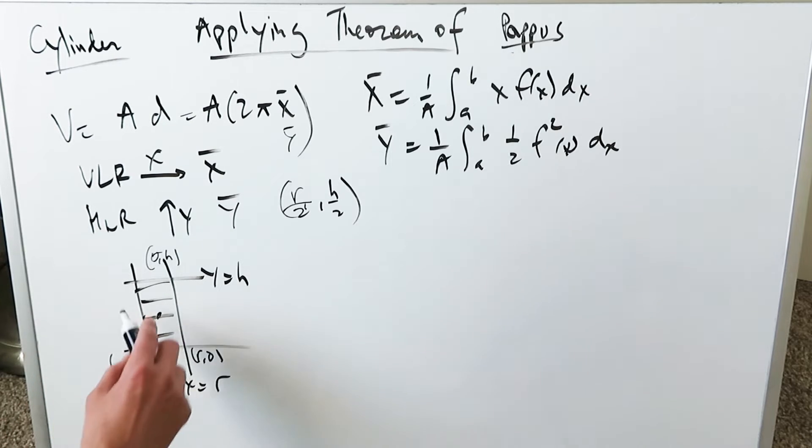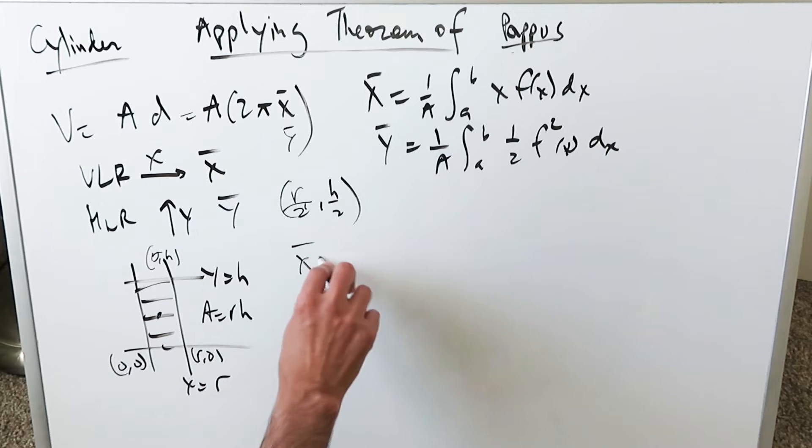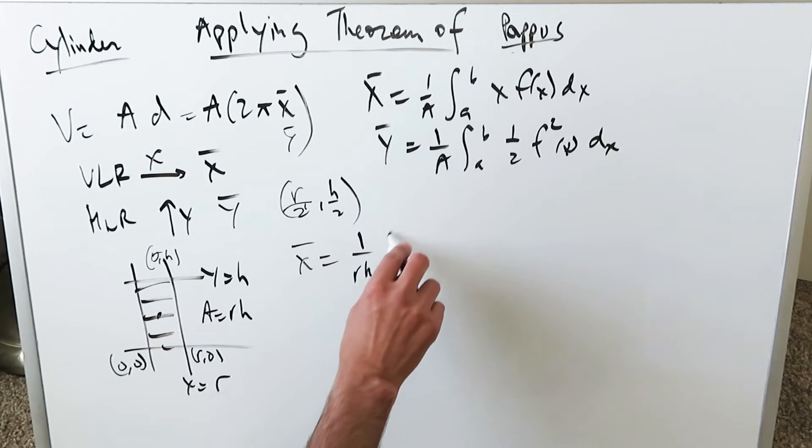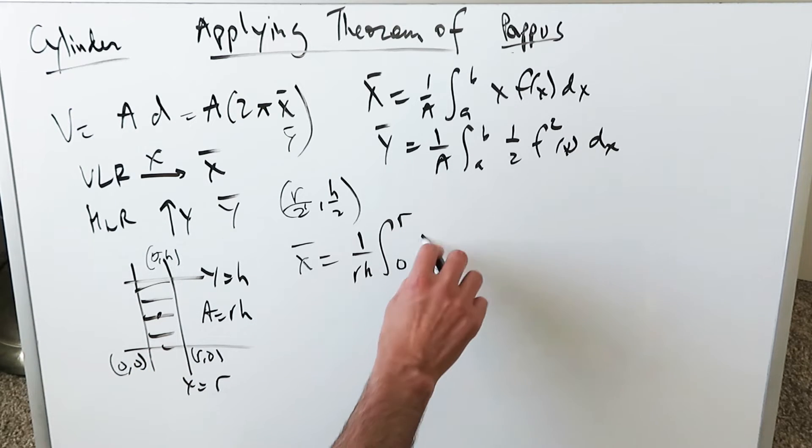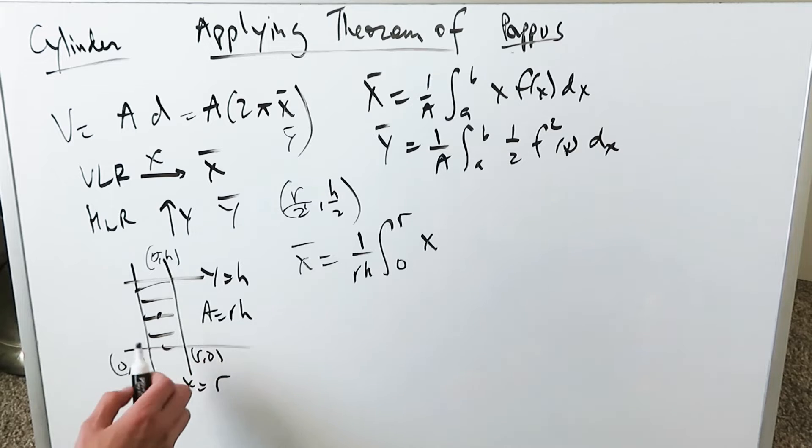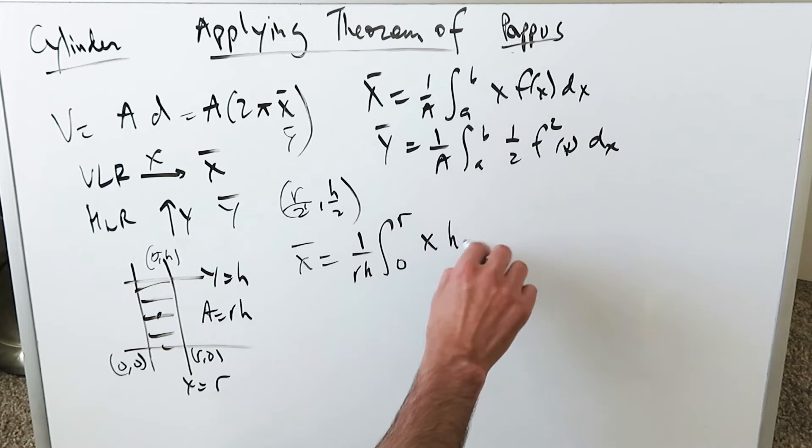If you wanted to figure it out by means of calculation you'd have to run through that formula. The area of this rectangular region would be rh. The x value you would determine as 1 over rh. Then you're looking here along the x limits 0 to r, x times f of x. What's your f of x? y equals h.